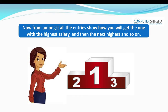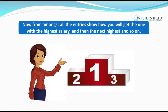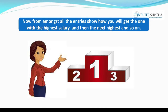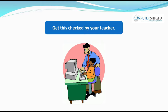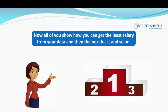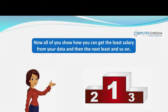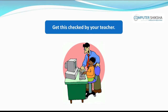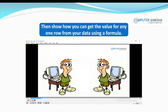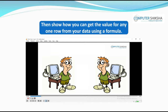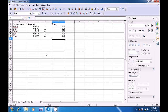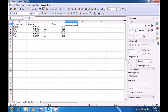Now from amongst all the entries, show how you will get the one with the highest salary and then the next highest and so on. Get this checked by your teacher. Now show how you can get the least salary from your data and then the next least and so on. Get this checked by your teacher. Let us watch the video for the correct answer. Watch this video now and see if you have answered the question correctly to find the rank — the highest salary first, second, third rank from the data.